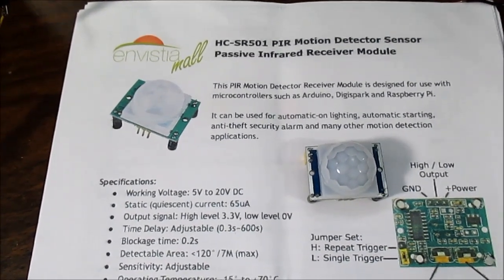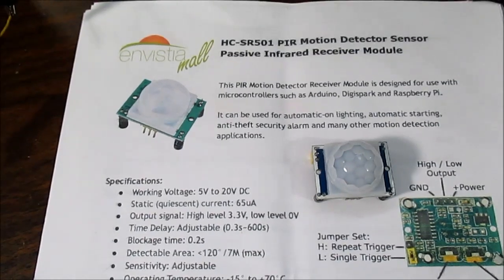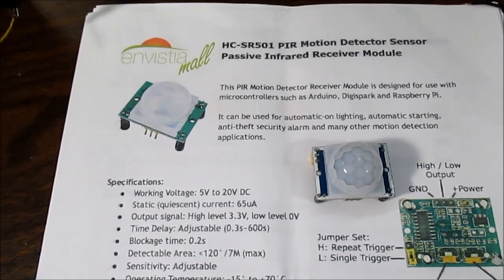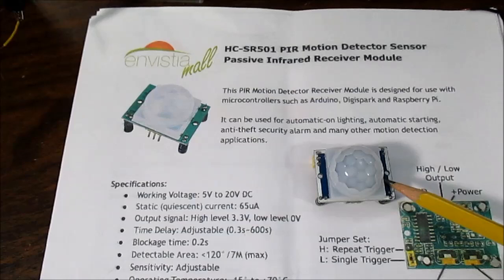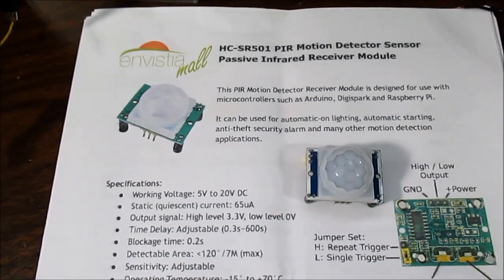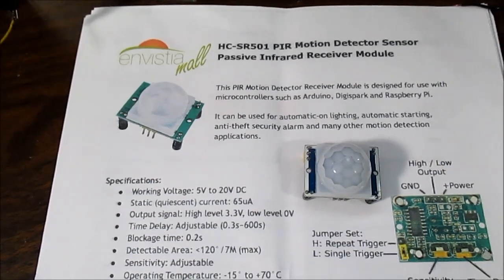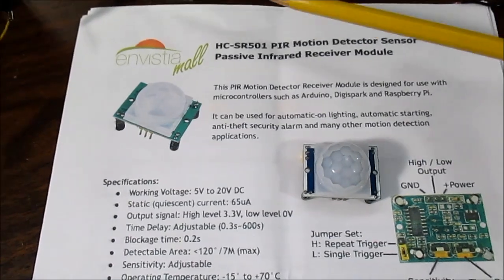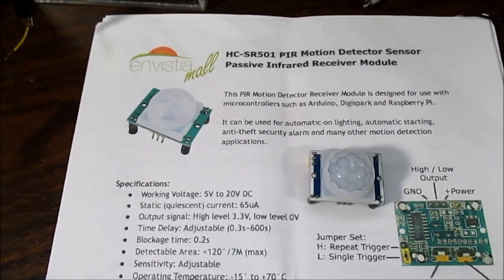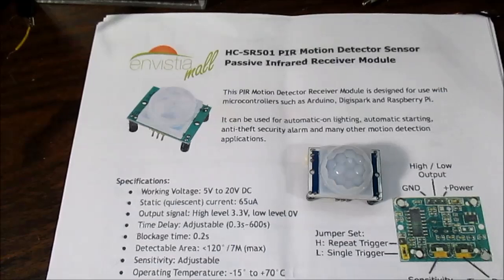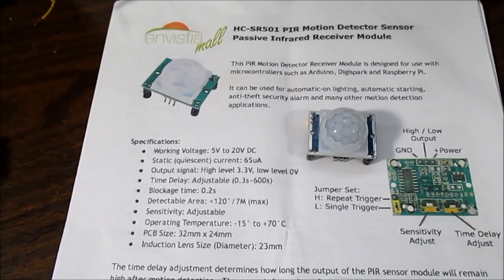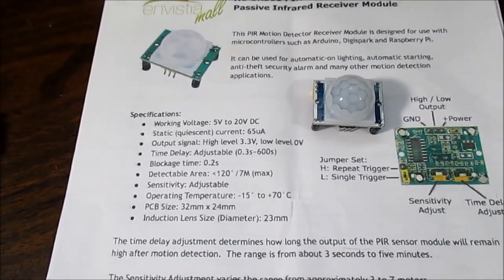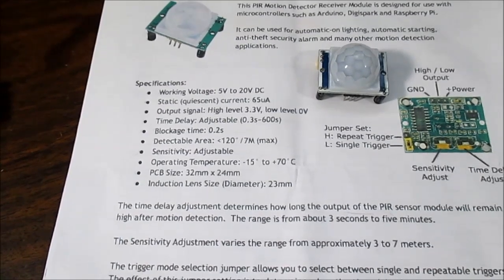If you buy stuff from China, sometimes it gets here quick. Sometimes it takes a month. But if you buy from these guys, you're buying from a USA seller. So if you're in the U.S., these are the guys to buy these things from. And they sell other Arduino type shields and sensors and things like that.